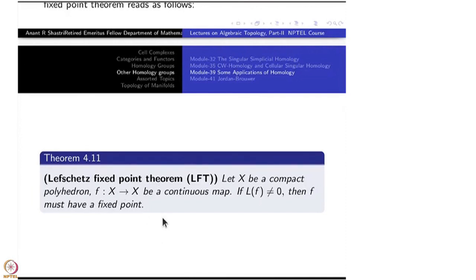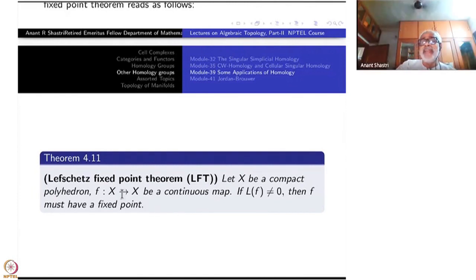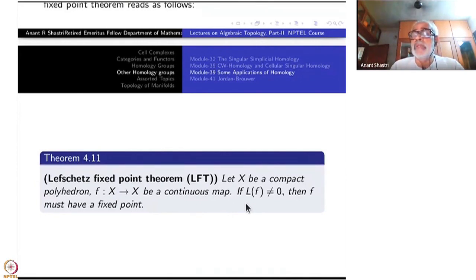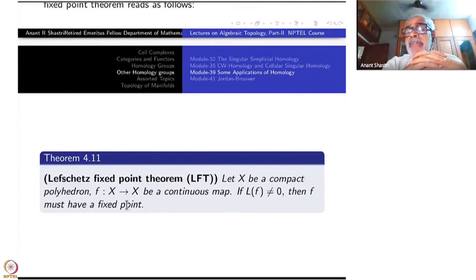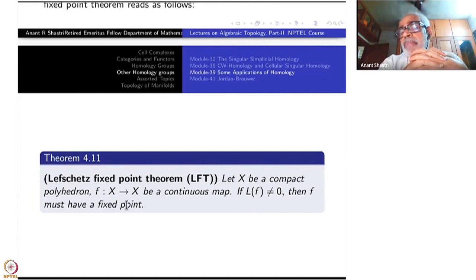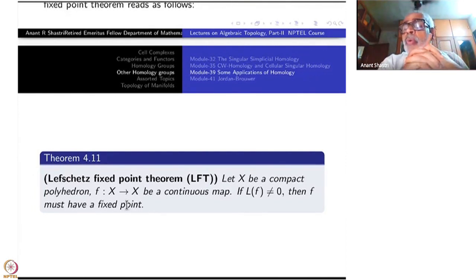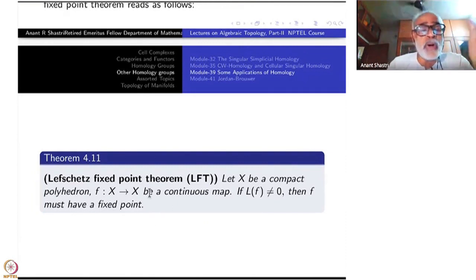If X is D^n, any map from X to X is homotopic to the identity map. L(f) is a homotopy invariant since it depends only on homology groups. Therefore L(f) equals L(identity). L(identity) is easy to compute: the only nonzero homology group of D^n is H_0, which is infinite cyclic. On H_0 any map induces the identity because there is only one connected component. Therefore L(f) equals 1 for any continuous function, and since L(f) is not 0, there is a fixed point.